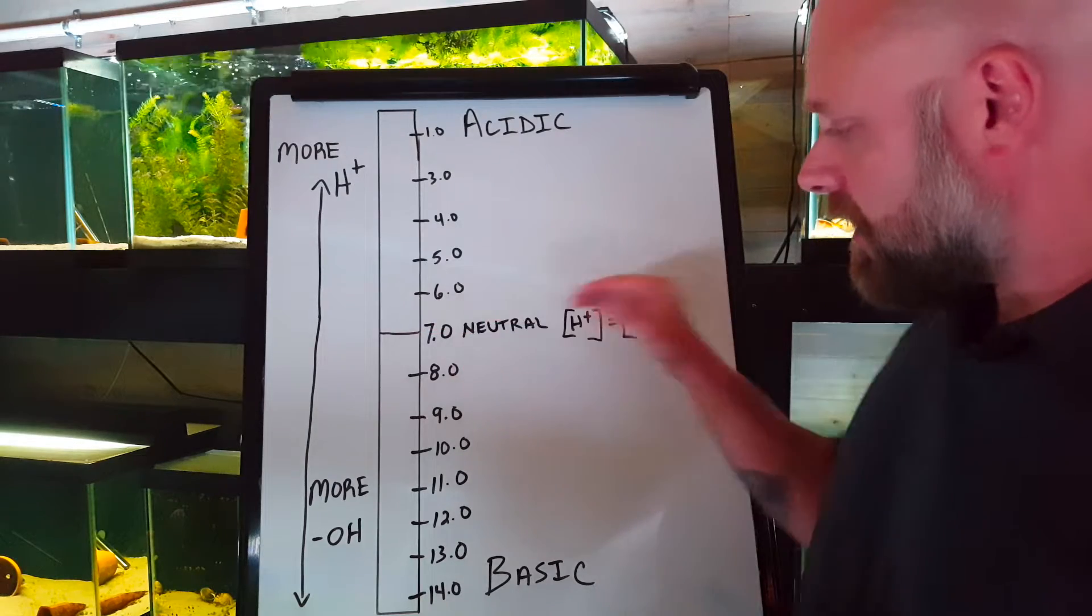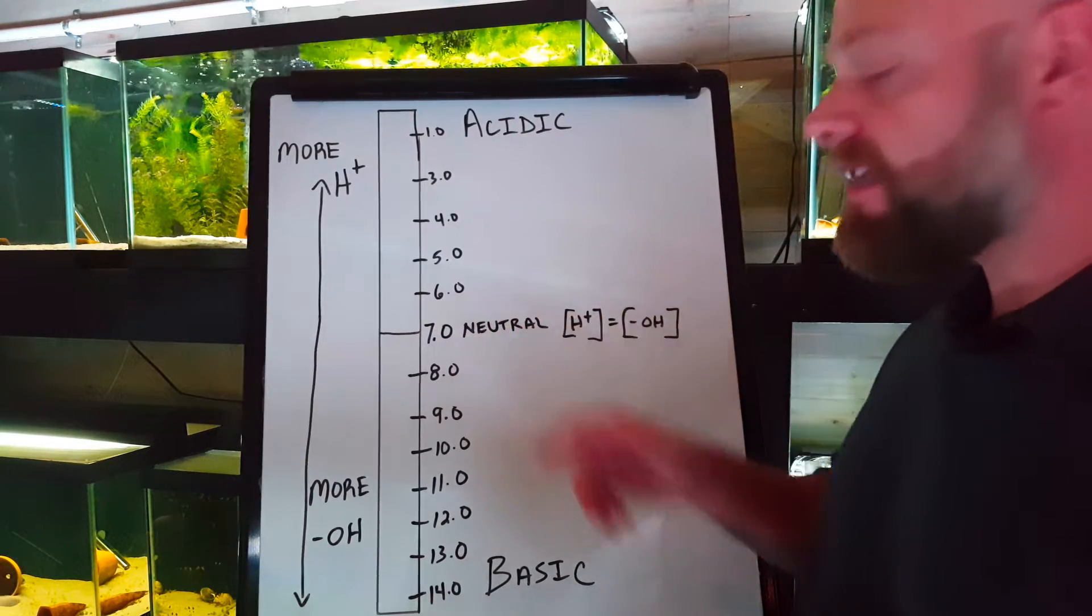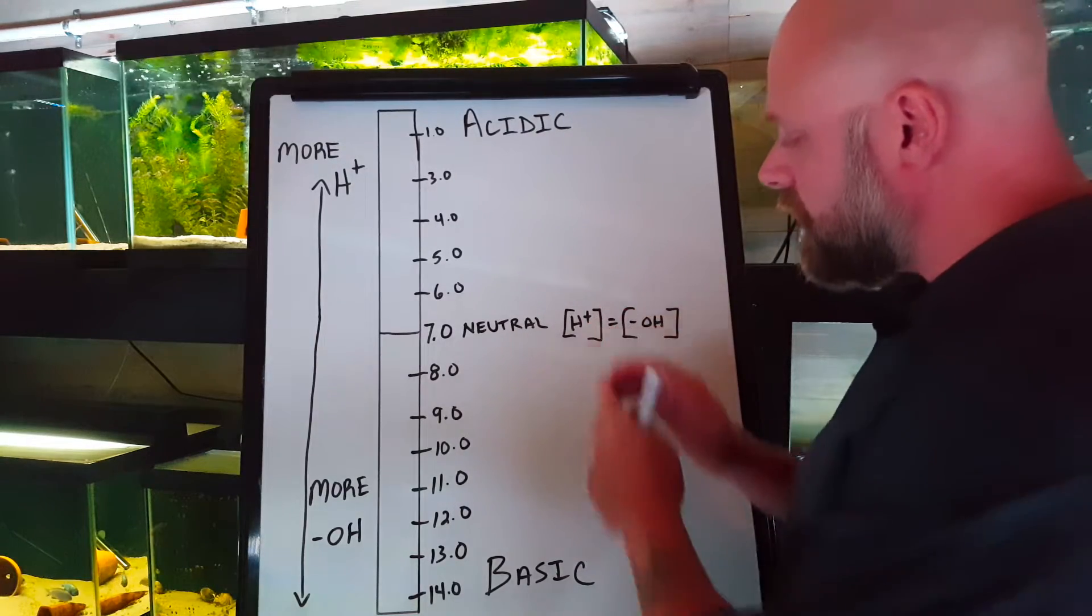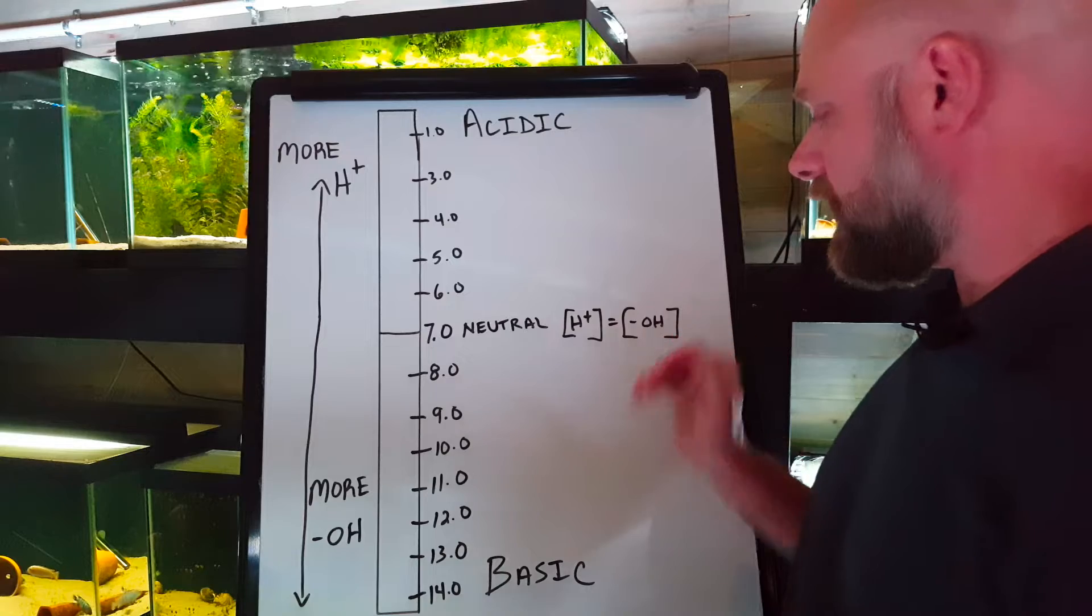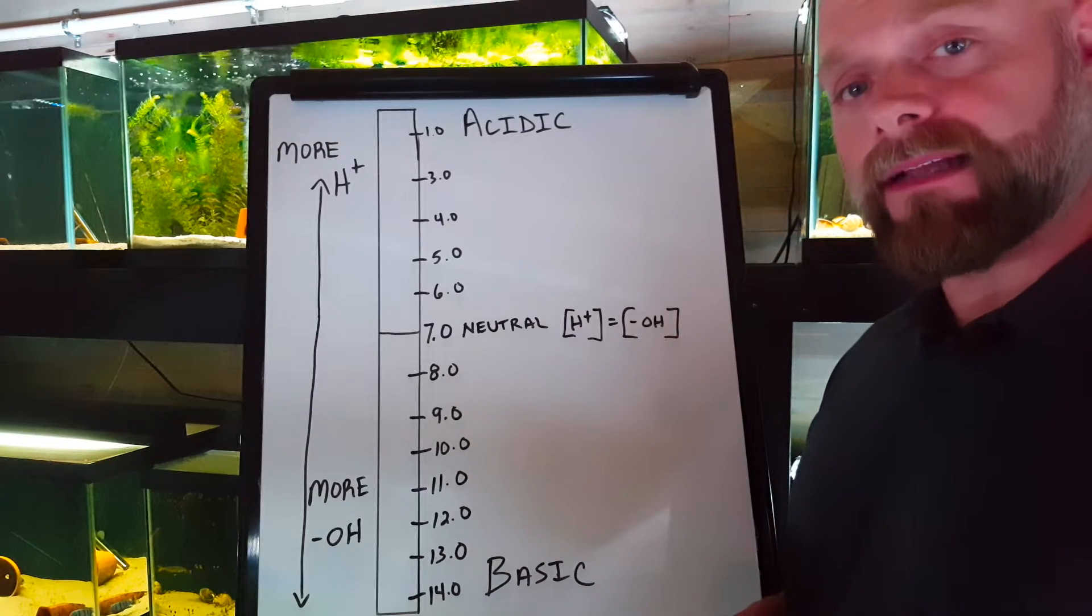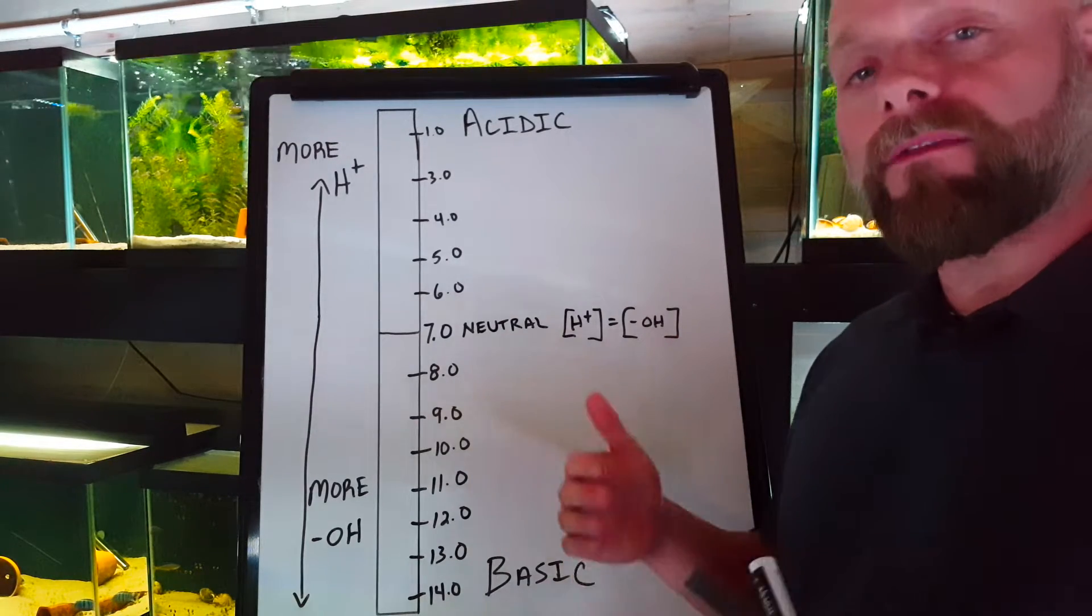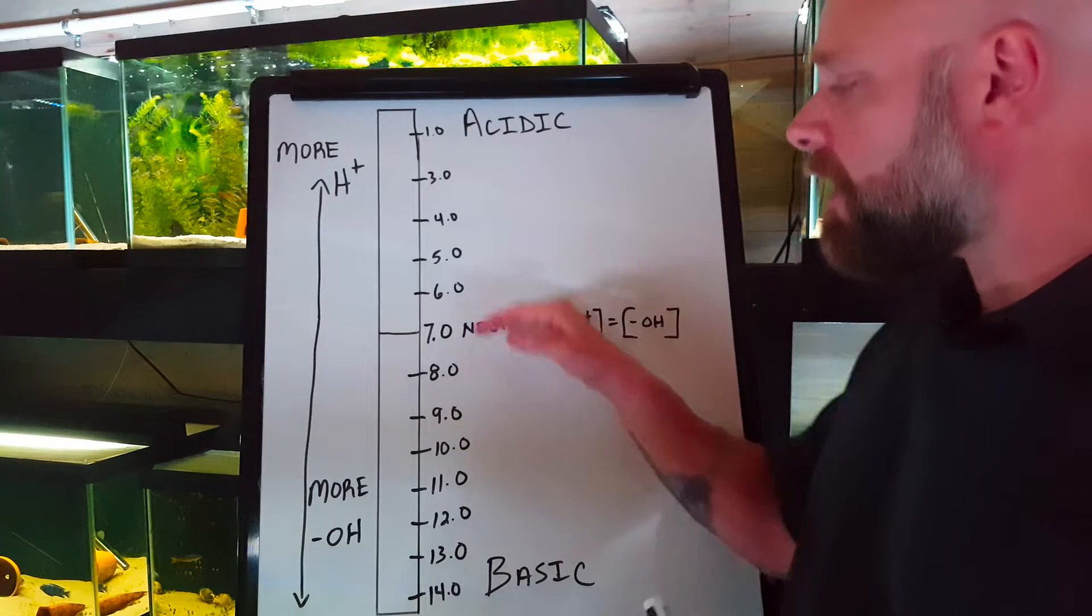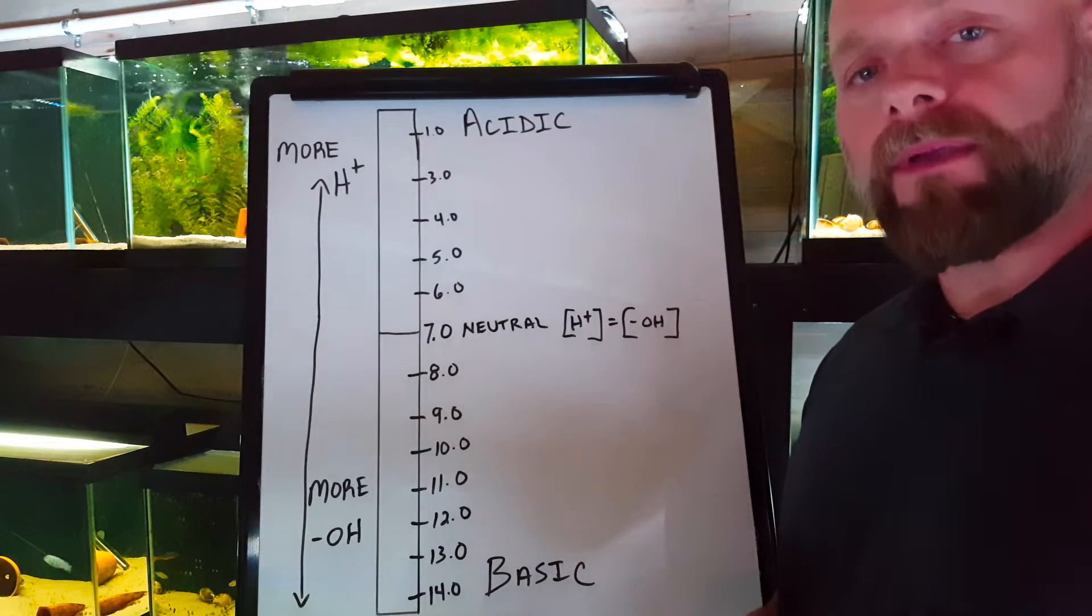As we see here in this pH scale, seven is a neutral pH. That means the concentration of your hydrogen ions is equal to the concentration of hydroxide ions. The vast majority of fish that we keep in the freshwater aquarium hobby do fairly well right around a neutral pH of seven.